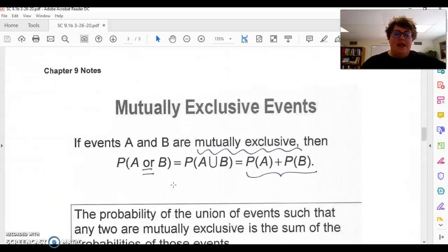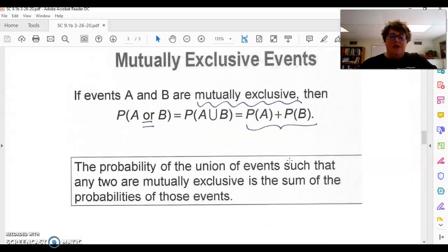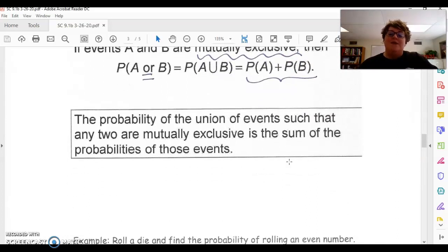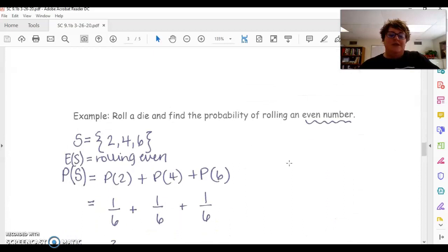Now, to find the probability of a mutually exclusive event. So this is how it's written. It's a probability of A or B. Probability of either or things happening. And it's not the intersection, it's the union. That means you're finding the probability of each option, each event, and you're adding it together. So the probability of the union of events such that any two are mutually exclusive is the sum of the probability of those events.